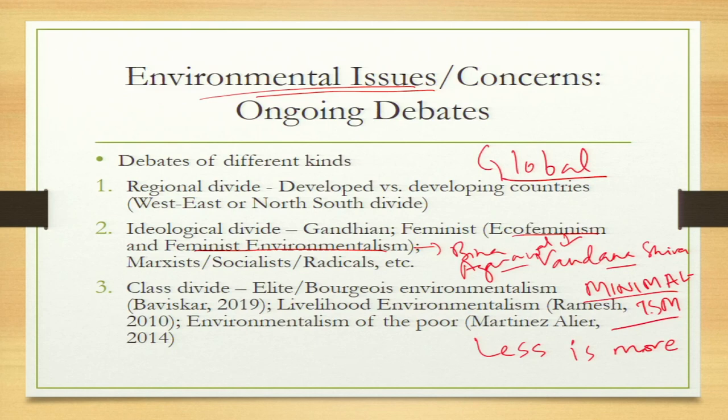The third concept is 'environmentalism of the poor,' coined by Martinez Alier. He says that in India the poor are the most concerned about environment and differentiates this from environmental concern in the west, where conserving nature is about spending time with nature or having a clean lake — looking at nature as a luxury. In India, it is the poor who are most dependent on rivers and forests, making their environmentalism fundamentally different.